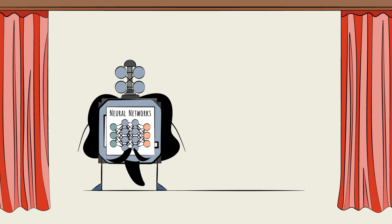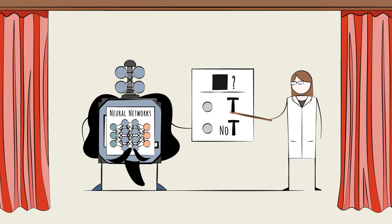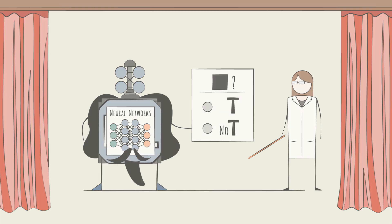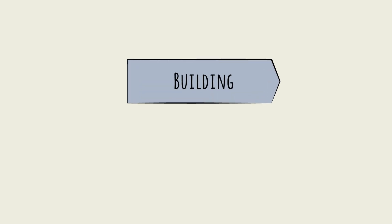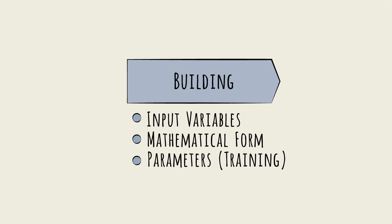To better understand the neural network, let's build a simple one for our t-no-t image recognition model. Recall the three steps in building an AI model: choosing the input variables, choosing the mathematical form, and then finding the optimal parameters by training on a set of sample images.